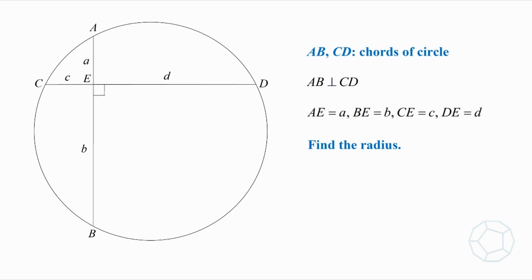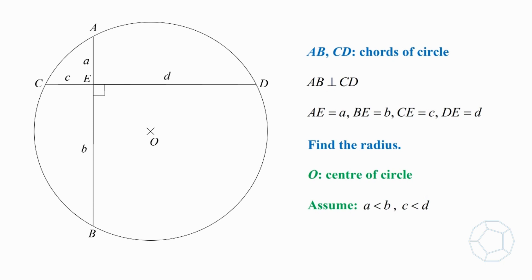Express the radius of the circle in terms of a, b, c, d. First of all, we denote the center of the circle by O. For simplicity, we assume that a is less than b, and c is less than d. Later on, you will see that this requirement is not necessary in the answer.